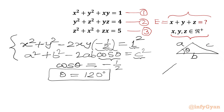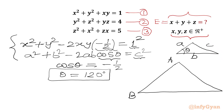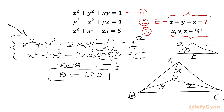Now I will draw a triangle with vertices a, b, c, and consider one interior point o. Side a·o is x, side b·o is y, and side o·c is z. From the first equation, x² + y² − 2xy·cos(120°) = 1², so the included angle at o between sides x and y is 120 degrees, and the opposite side AB has length 1 unit.